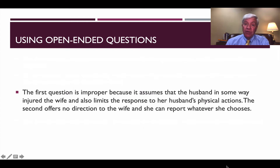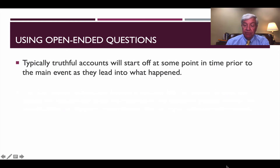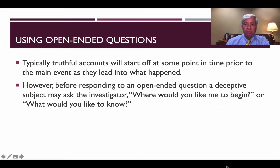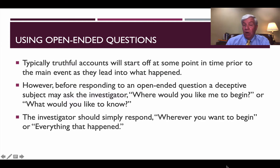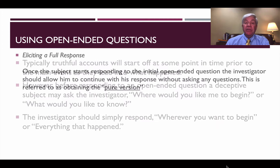The second question offers no direction at all and allows the wife to report whatever she chooses. Truthful accounts usually start off at some time period prior to the event itself and work their way into the primary event that occurred. However, before responding to an open-ended question, a deceptive subject may ask, 'Where do you want me to begin?' or 'What do you want to know?' — to which the investigator can simply respond, 'Wherever you want to begin. Everything that happened.'